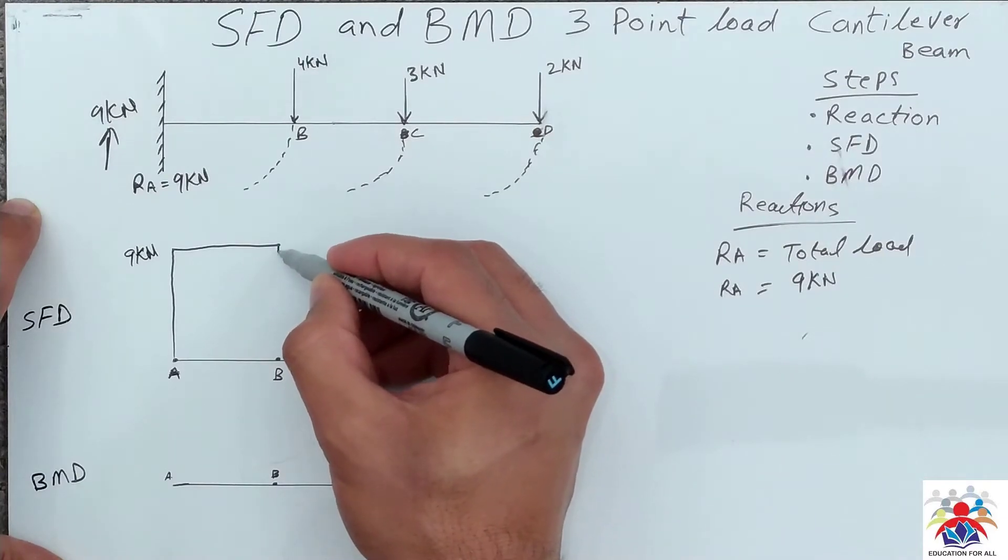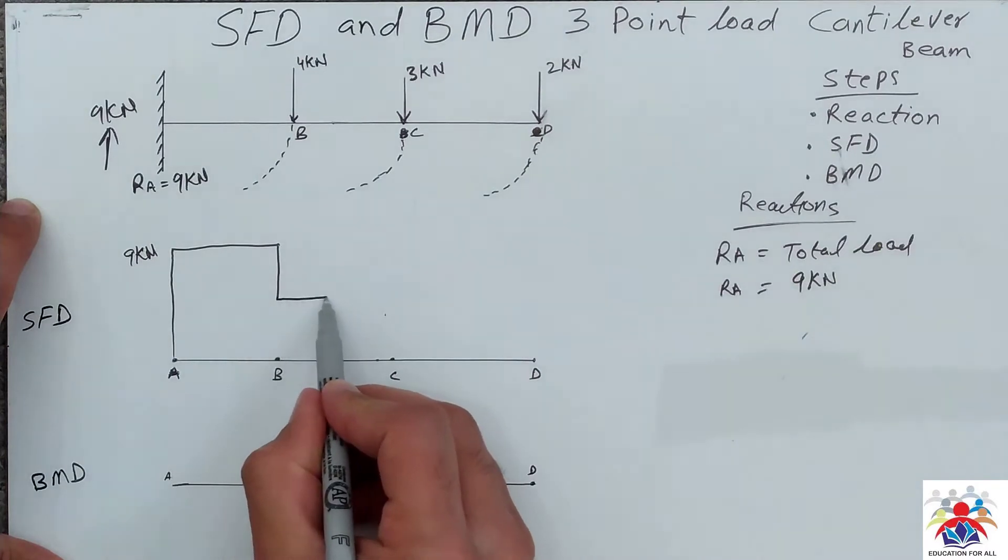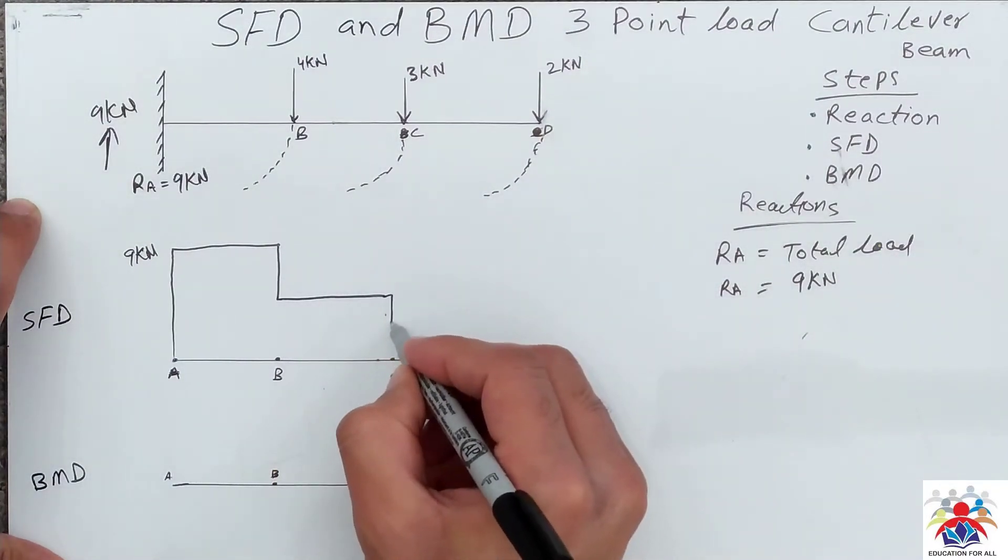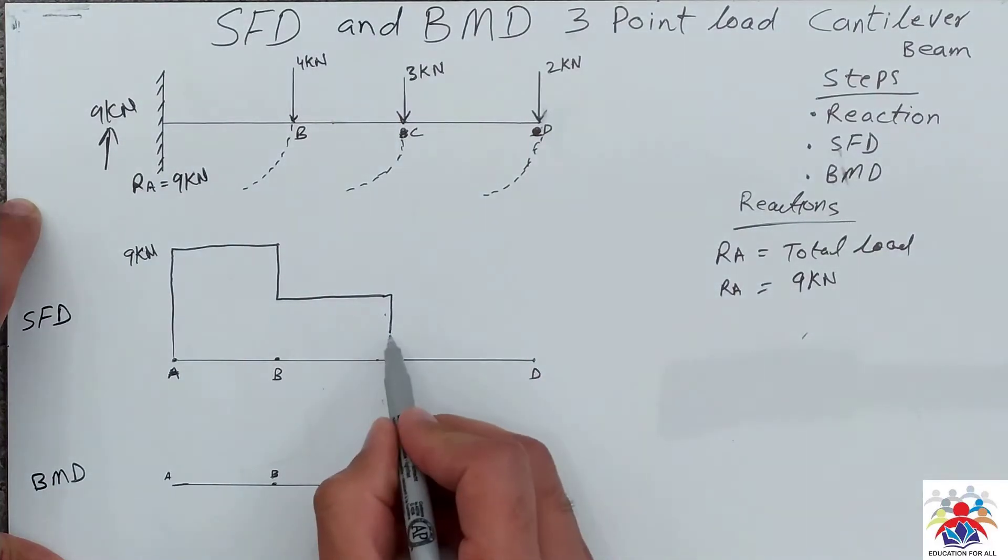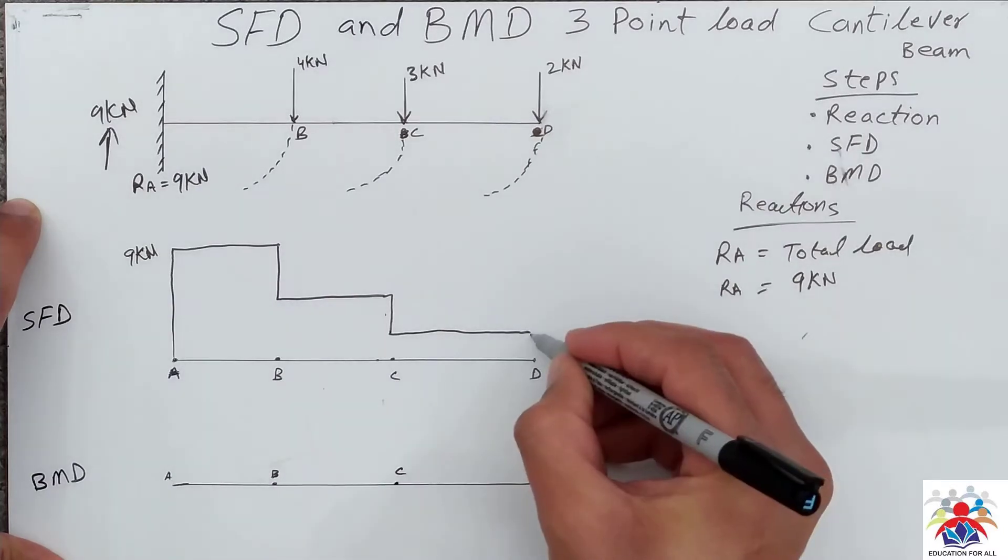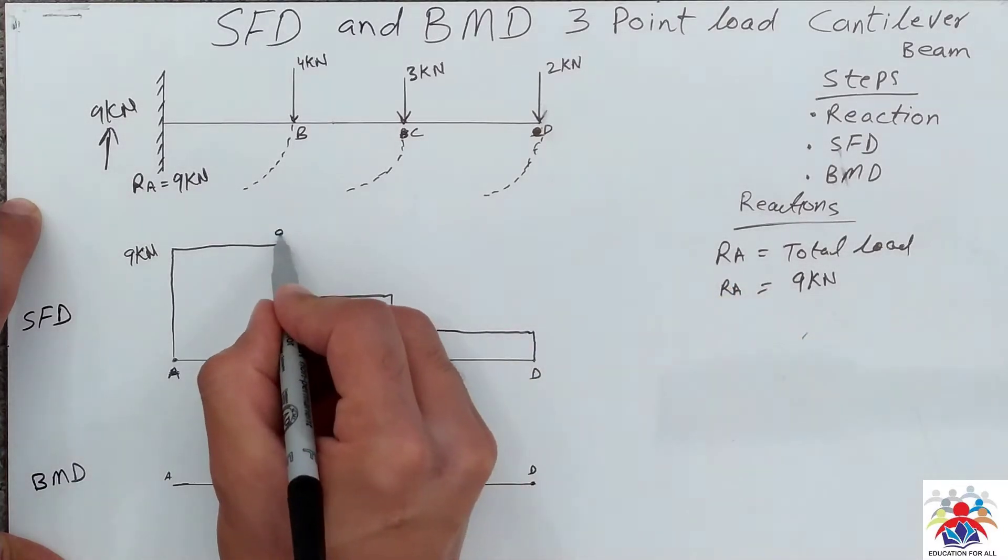Once we get to point C we have to go down 3 kilonewtons, and finally we have to go to point D and go down by 2 kilonewtons.